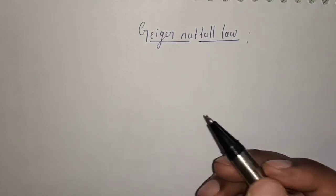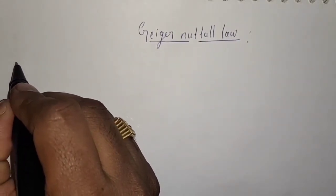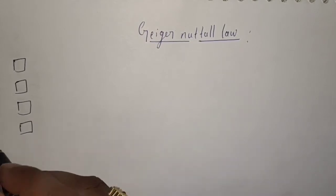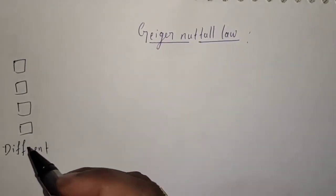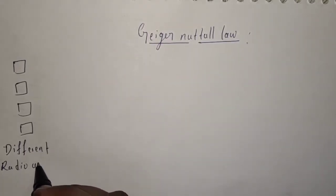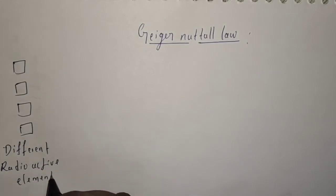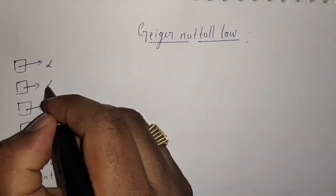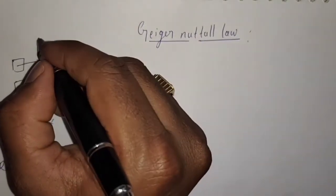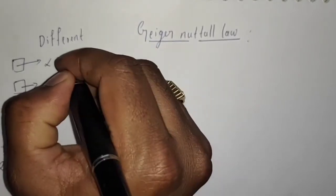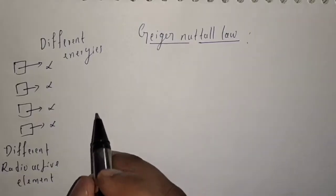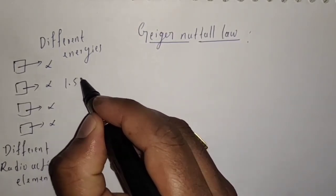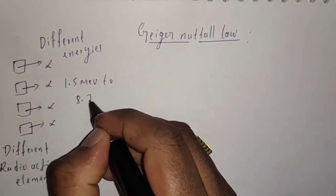One of the important things is that all radioactive elements emit alpha particles with different energies. Here I have taken four different radioactive elements, and these four radioactive elements all emit alpha particles with different energies. All the radioactive elements emit alpha particles in the energy range from 1.5 MeV to 8.75 MeV.